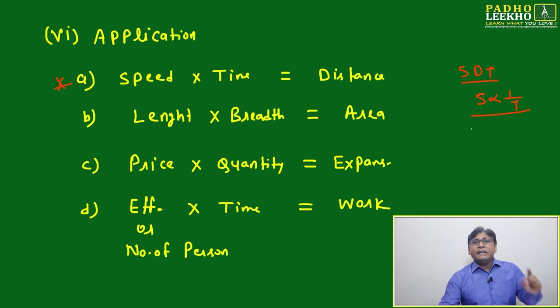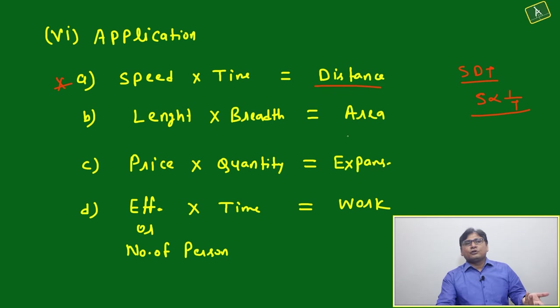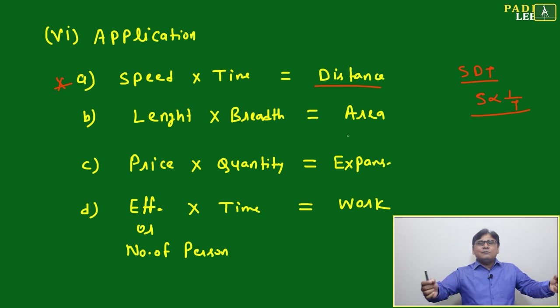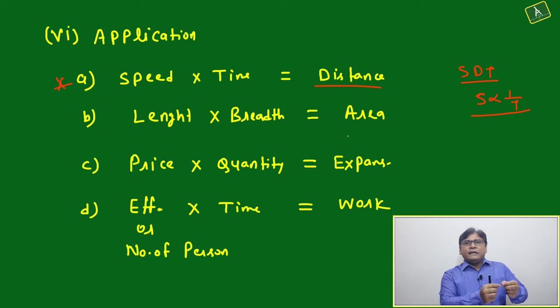Length and width equal to area. If area is constant, length will become inversely proportional to width. Means if you are increasing length by 20 percent, then width will decrease accordingly.